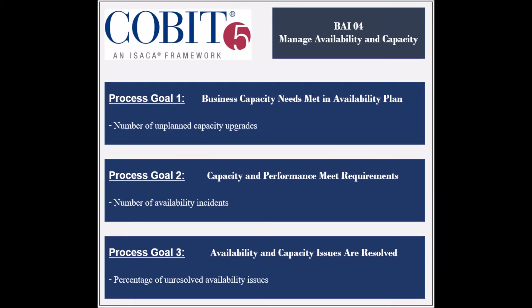The process has three process goals. The first goal is to ensure that business capacity requirements are anticipated in the availability plan, measured by the number of unplanned capacity upgrades. The second process goal is to ensure that capacity and availability meet requirements, measured by the number of availability incidents. The third process goal is to ensure that availability and capacity issues are identified and resolved, measured by the percentage of unresolved capacity and performance issues.